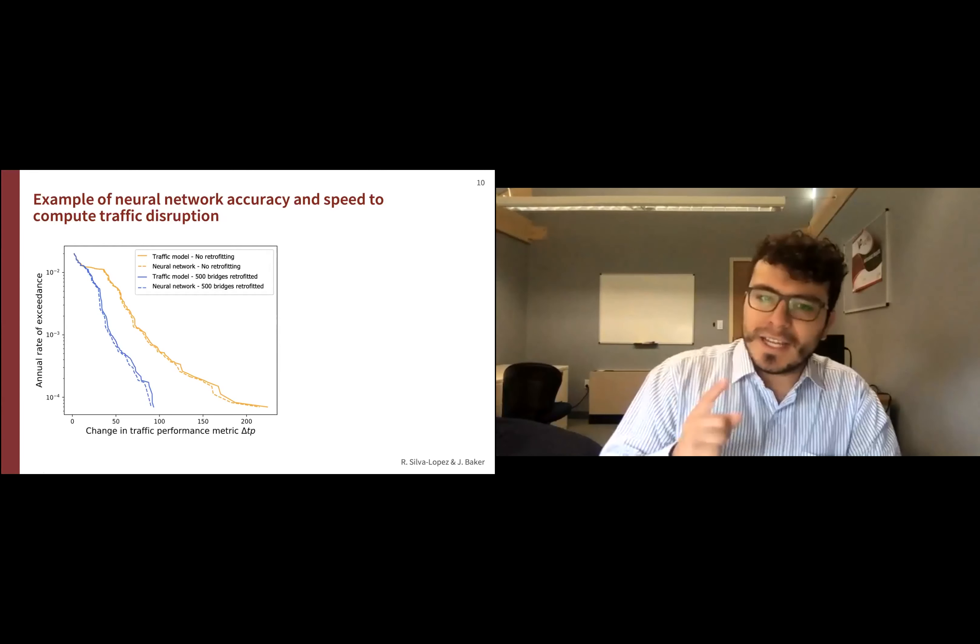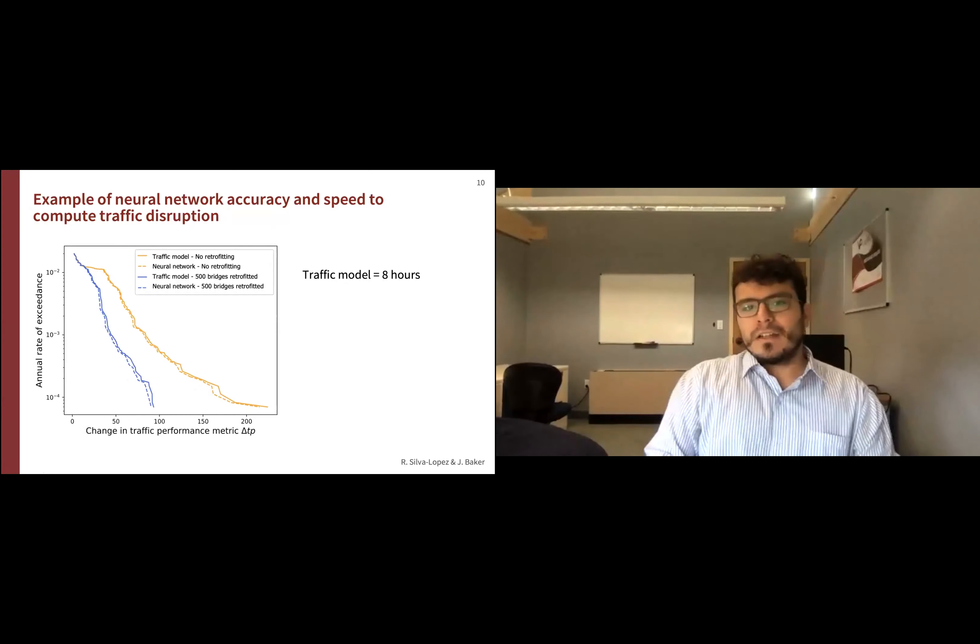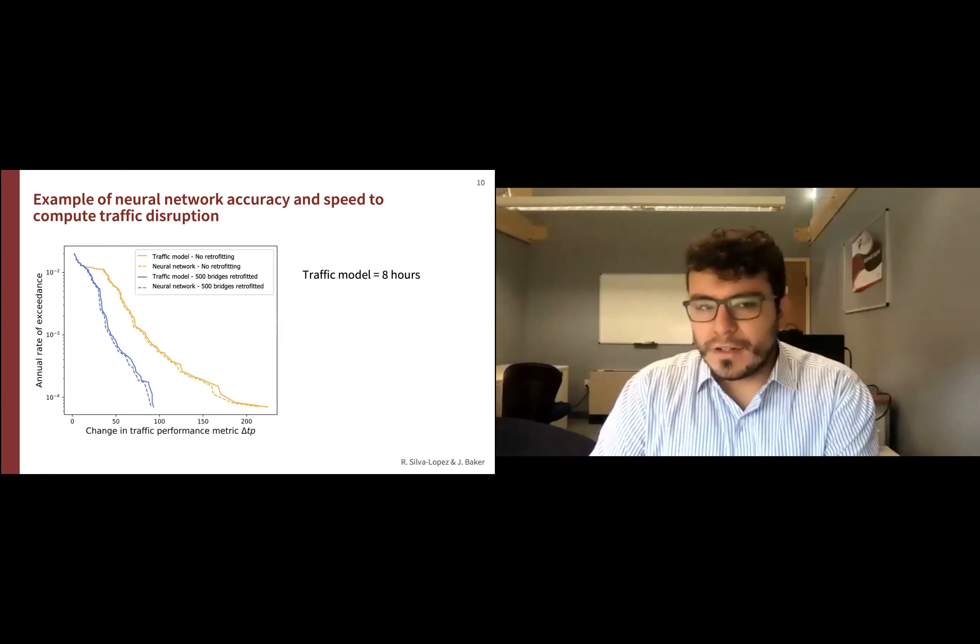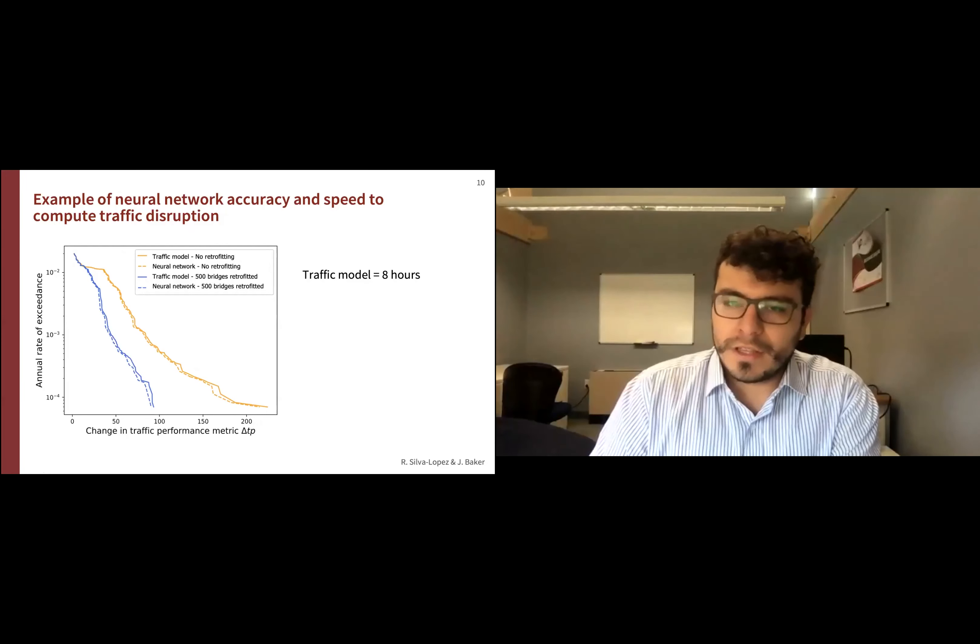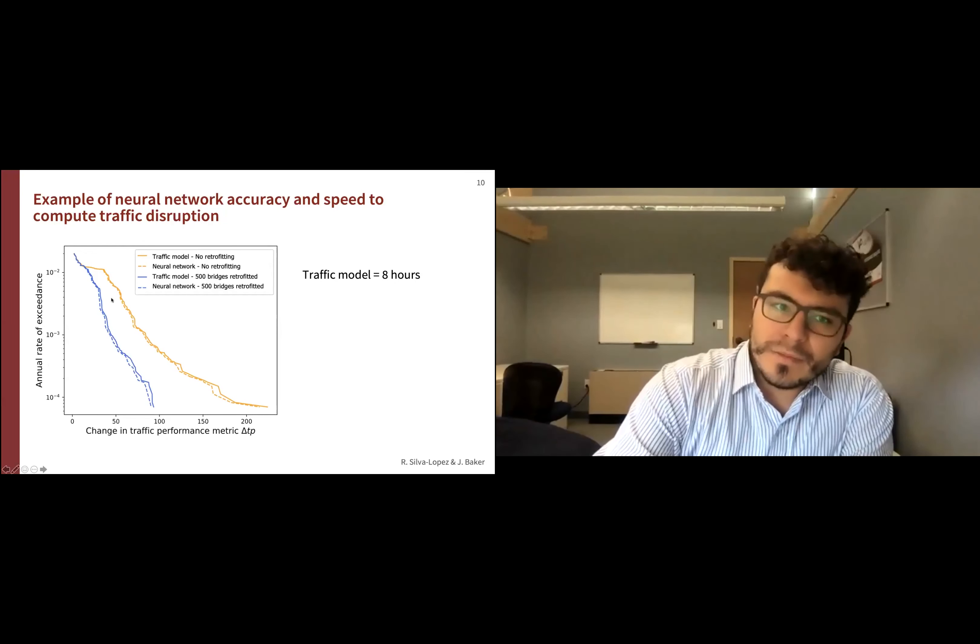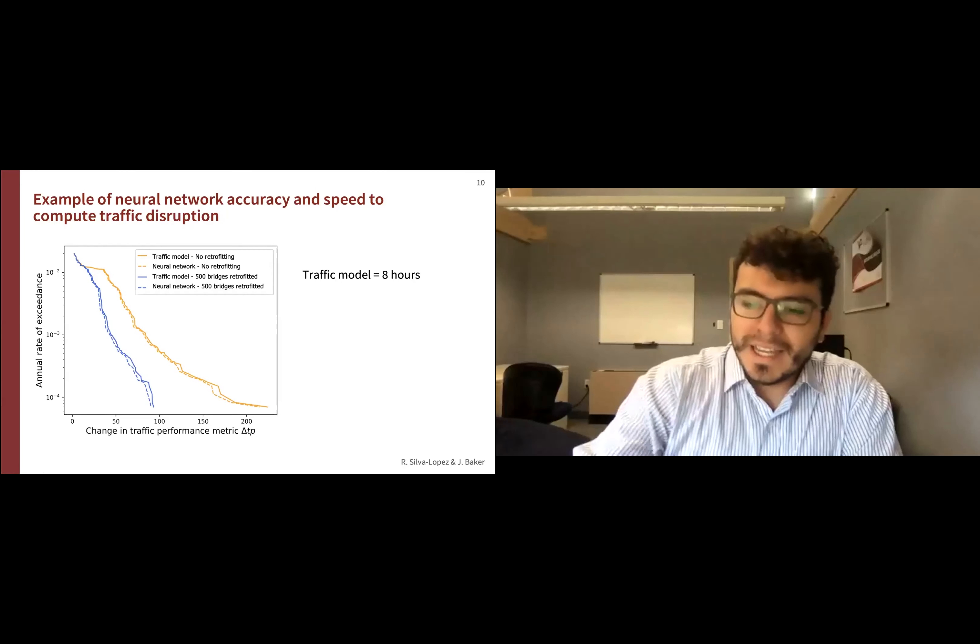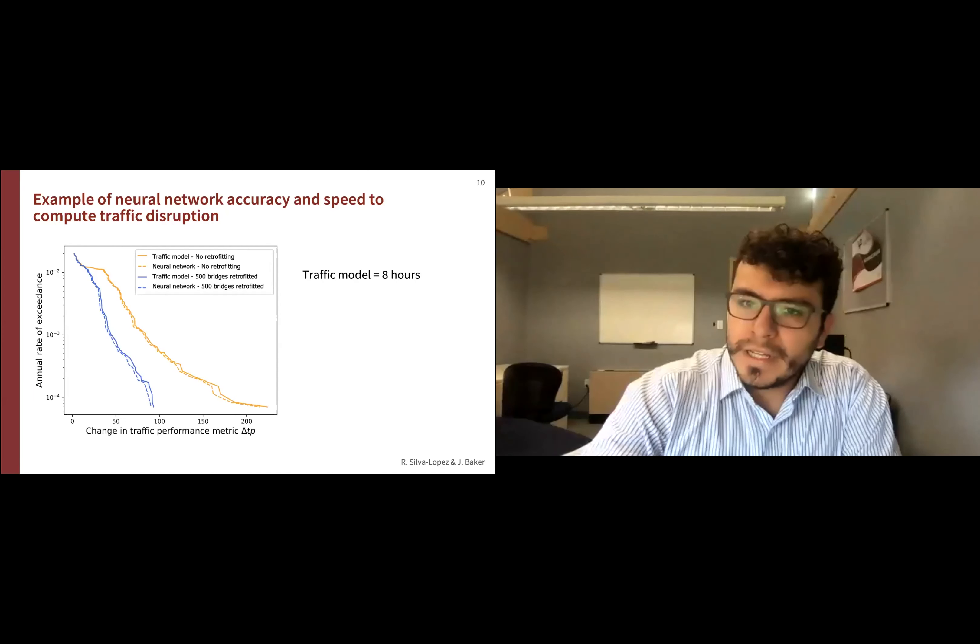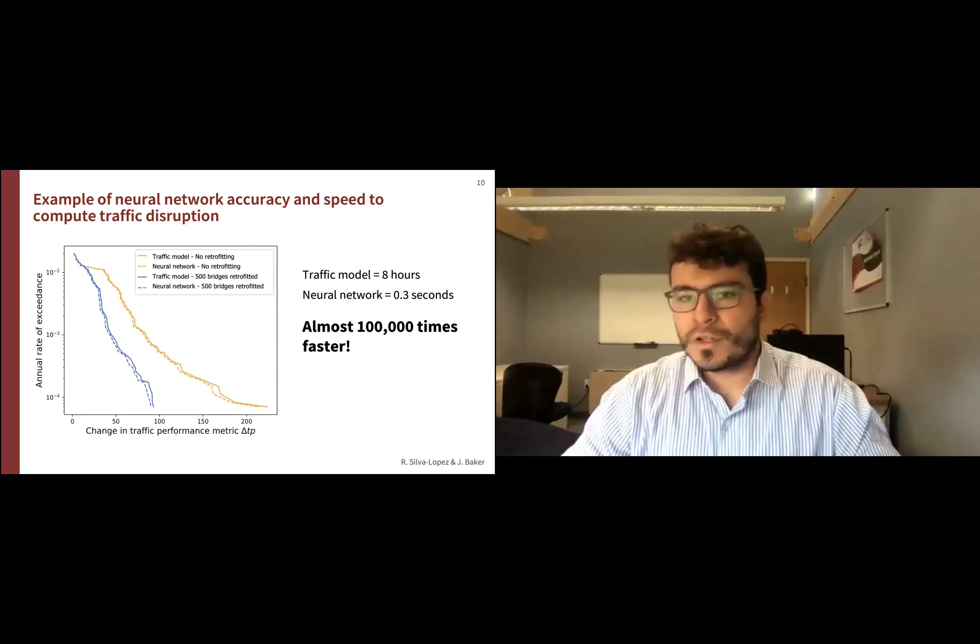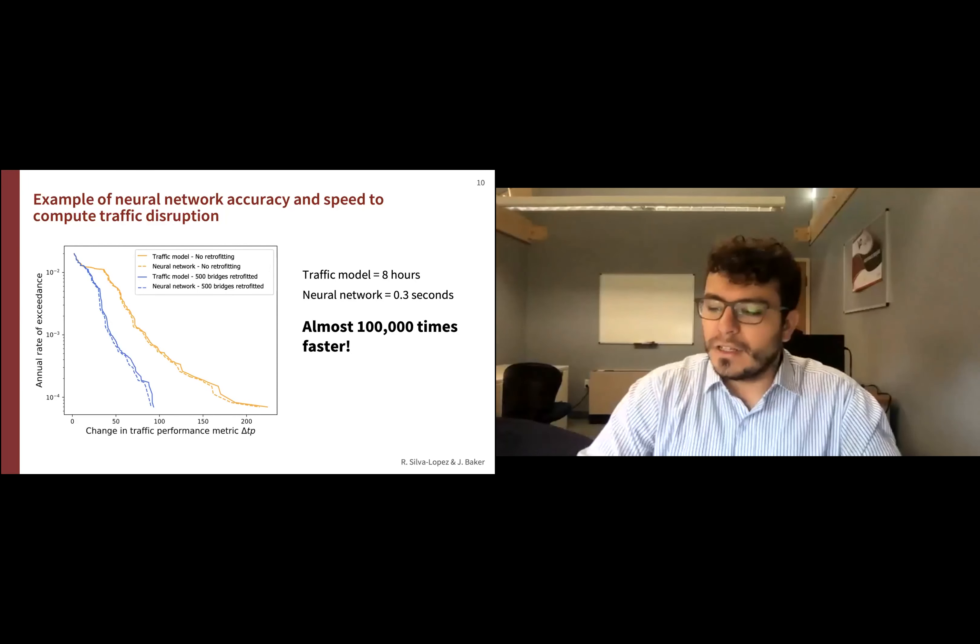Actually, they're not the same, they're really close in a really good way. And it's time-wise, the traffic model, which I run on my personal computer, a MacBook Pro from late 2016, would take eight hours to compute. This plot that I'm showing took 16 hours to run on my own computer. But if you think about the neural network, it took 0.3 seconds to develop the same curves, which is almost 100,000 times faster.